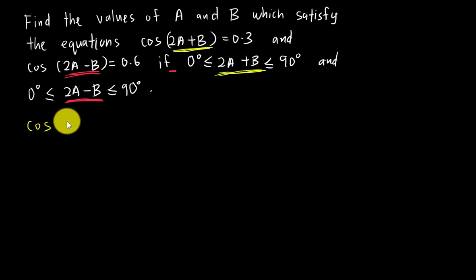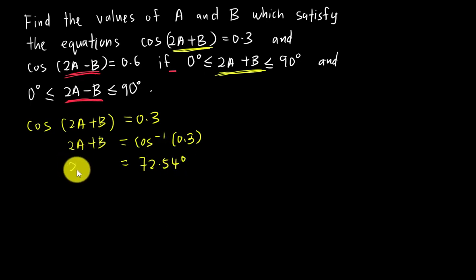We have cos(2A+B) = 0.3. First, I want to change my calculator into degree mode because the range of 2A+B is in terms of degrees. I'll move the cos to the other side to get 2A+B = cos⁻¹(0.3). I type into the calculator and get 72.54°. You realize I don't make B the subject or A the subject here because I just feel like leaving this pattern first.